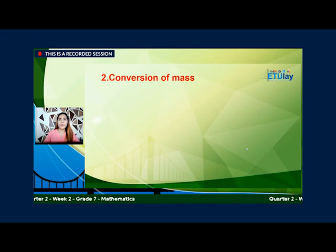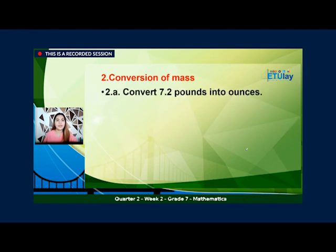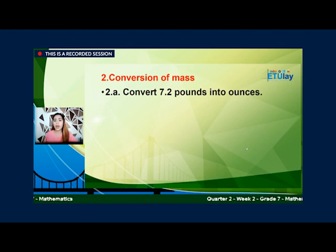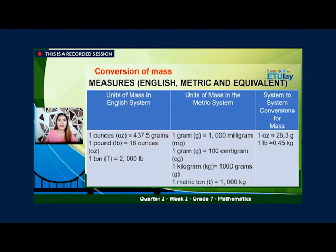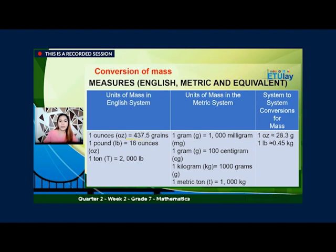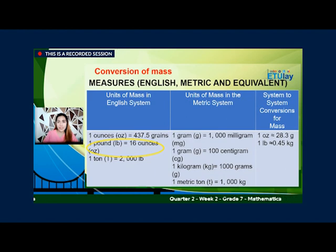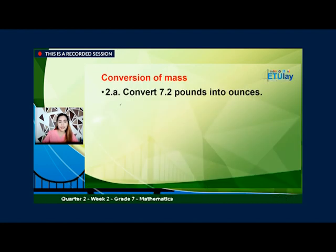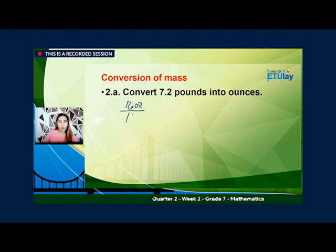Okay, next is the conversion of mass. Let's have the first example: convert 7.2 pounds into ounces. Meron din tayong equivalent conversion for mass — English system, metric system, and system to system. Makikita natin na isang pound ay equal kay 16 ounces. So gagamitin natin siya. So 7.2 pounds, yung 16 ounces natin kanina over 1 pound.